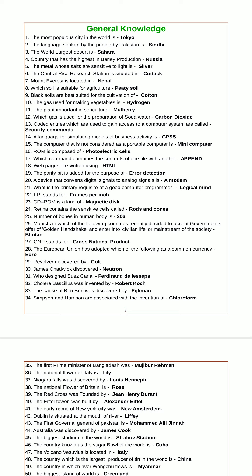The Central Rice Research Station is situated in Cuttack. Mount Everest is located in Nepal. The soil most suitable for agriculture is alluvial. Black soils are best suited for the cultivation of cotton.